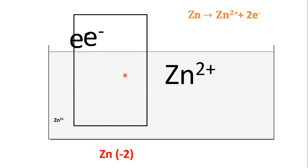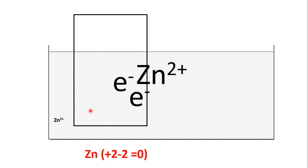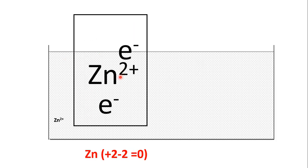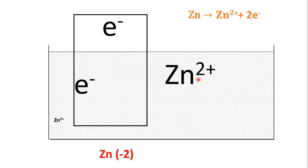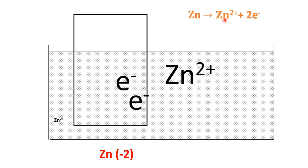The Zn²⁺ ion comes out of the zinc rod into the solution — in other words, the zinc rod dissolves — leaving behind the two electrons in the electrode. So at this instant, the electrode will have only two negative charges. What has happened is: from the zinc rod, Zn²⁺ has come out into the solution, leaving behind two electrons in the electrode.